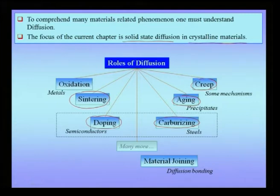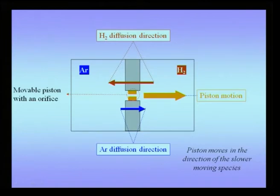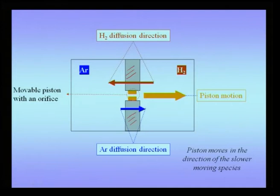One other example would be diffusion bonding, where two materials are joined by using the process of diffusion. Let us start with a gaseous example, though we are going to focus only on diffusion in crystalline materials. Suppose we consider a large chamber split into two parts using a hard wall shown here in gray color, and a movable piston right at the center shown in orange. One side of this chamber has a gas like argon, the other side has a lighter gas like hydrogen which can diffuse faster.